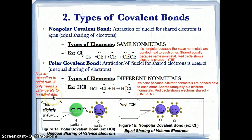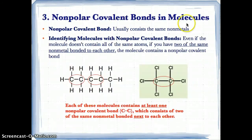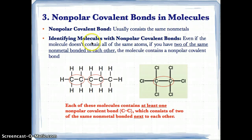Remember that H is an exception to the octet rule because it only needs two valence electrons to be full or stable — that's the duet rule. Now let's talk about nonpolar covalent bonds and molecules. Nonpolar covalent bonds involve the same nonmetals bonded right next to each other. To identify molecules with nonpolar covalent bonds, find which molecule has two of the same nonmetal bonded right next to each other.